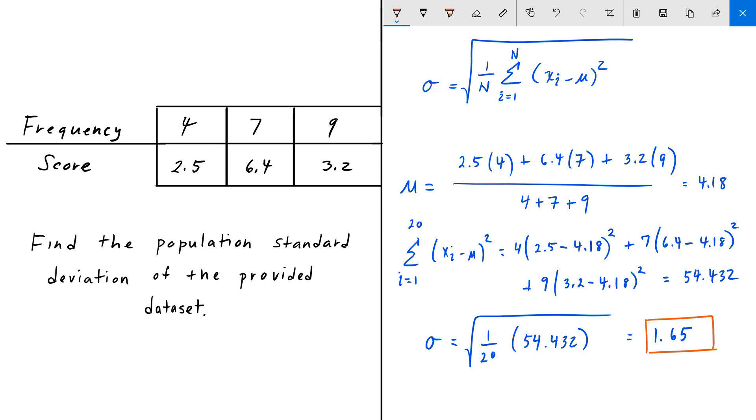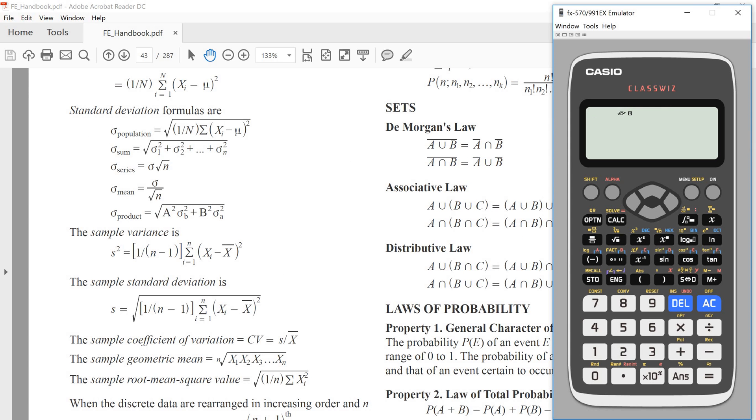So that is the answer, 1.65. But as always, there's an easier way of doing this. We can plug in these numbers into our Casio Classwiz calculator, and it has a feature that will solve all this for us and give us even more information. We're gonna go over that tutorial now.